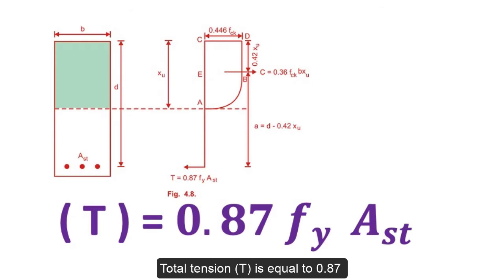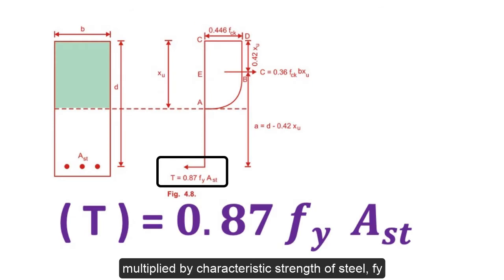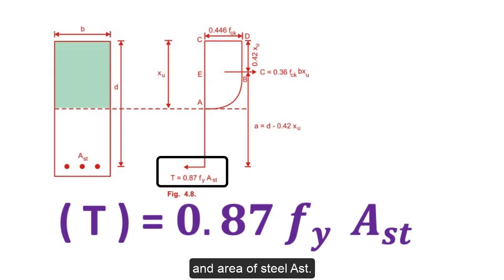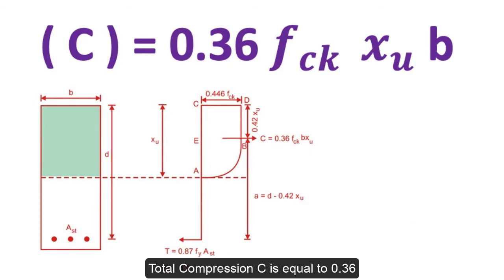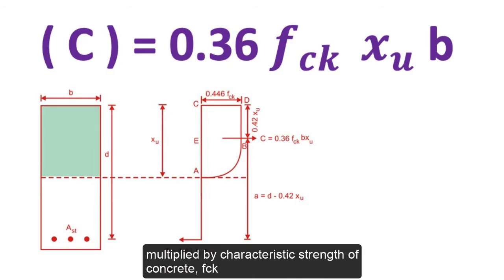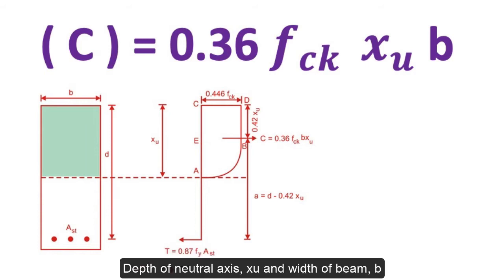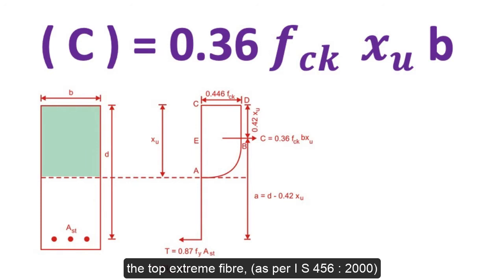Total tension T is equal to 0.87 multiplied by the characteristic strength of steel f_y and area of steel A_st. Total compression C is equal to 0.36 multiplied by the characteristic strength of concrete f_ck, depth of neutral axis x_u, and width of beam b, acting at 0.42 times the depth of neutral axis x_u from the top extreme fiber, as per IS 456:2000.